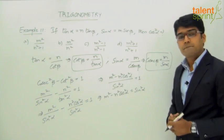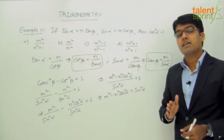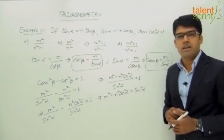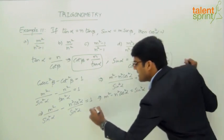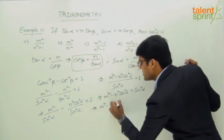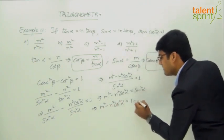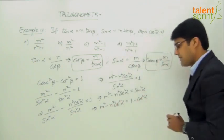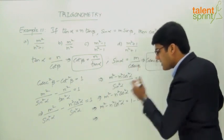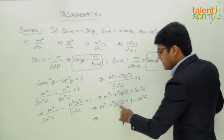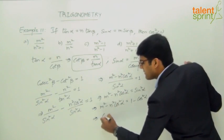Since sin²α + cos²α = 1, we know sin²α = 1 - cos²α. Replacing sin²α with 1 - cos²α in our equation m² - n²cos²α = sin²α, we get m² - n²cos²α = 1 - cos²α. Rearranging, we bring the cos²α terms to one side: cos²α - n²cos²α = 1 - m².